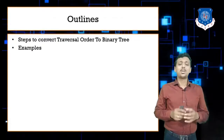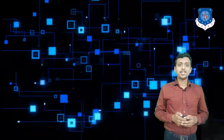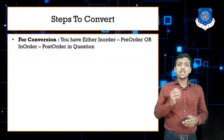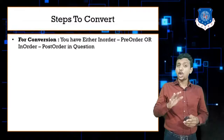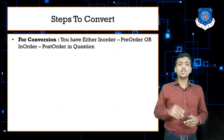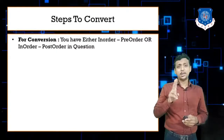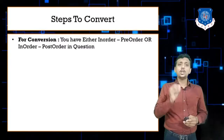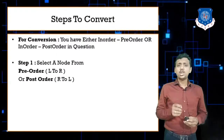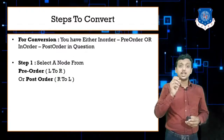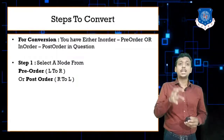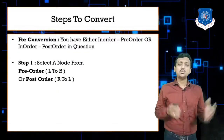Let's begin with the steps. Step number one: you are given a pair of traversal orders in your question — either in-order with pre-order, or in-order with post-order. From those, you need to select a root node to begin building your tree.